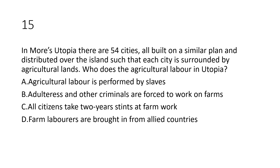Question number fifteen: In More's Utopia, there are 54 cities, all built on a similar plan and distributed over the island such that each city is surrounded by agricultural lands. Who does the agricultural labor in Utopia? Option A: agricultural labor is performed by slaves; option B: adulterers and other criminals are forced to work on farms; option C: all citizens stay two years each at farm work; option D: farm laborers are brought in from elite countries.